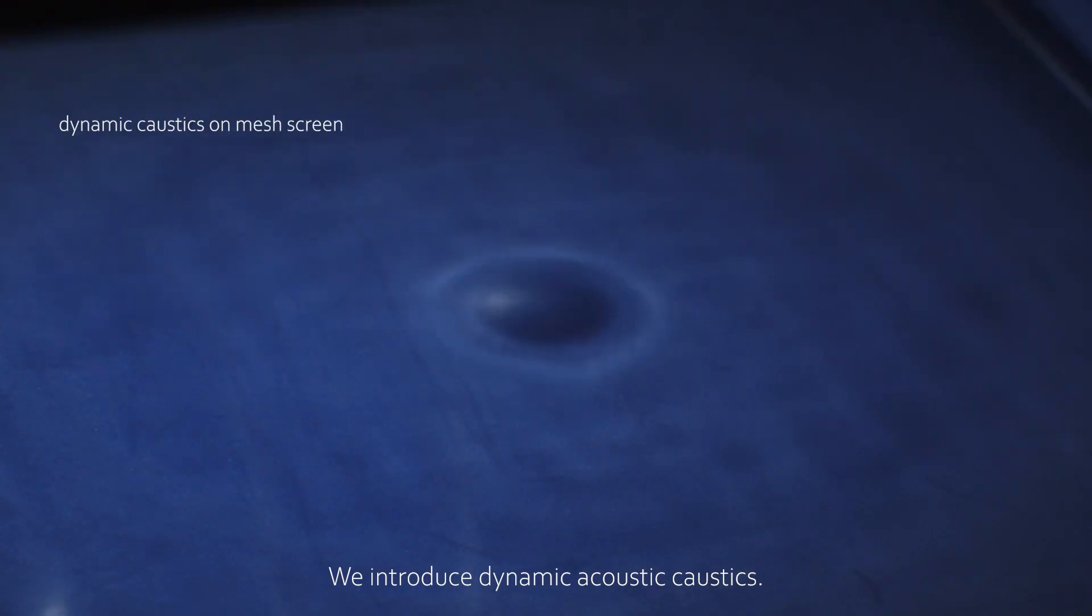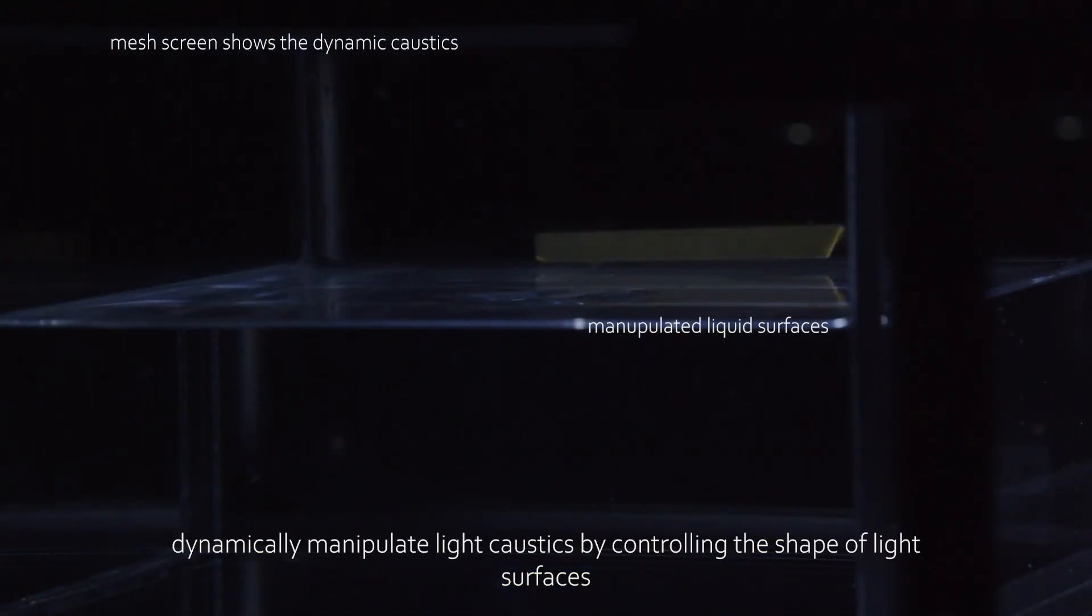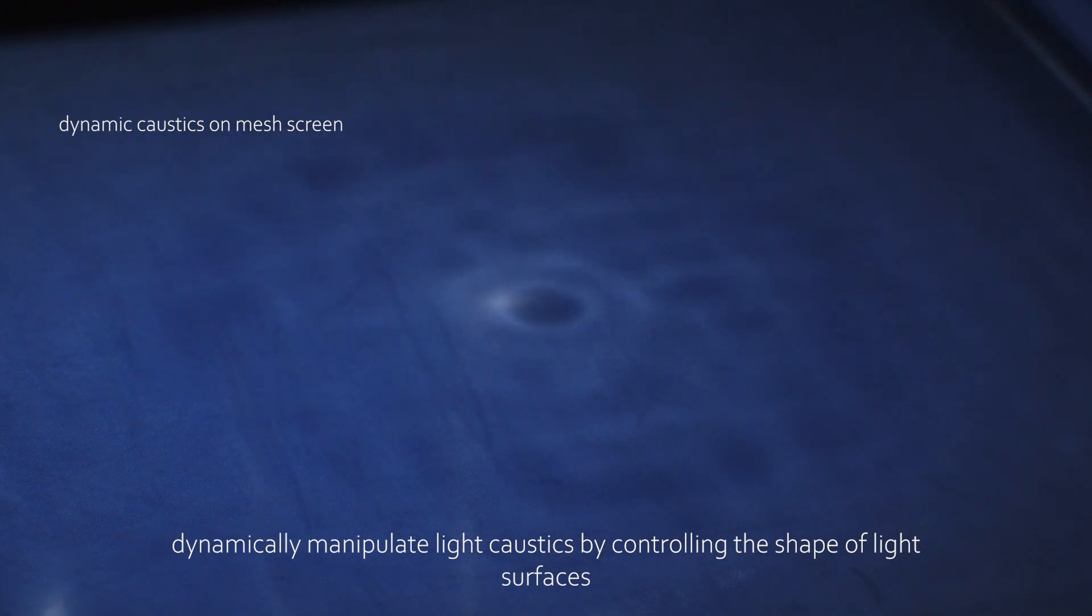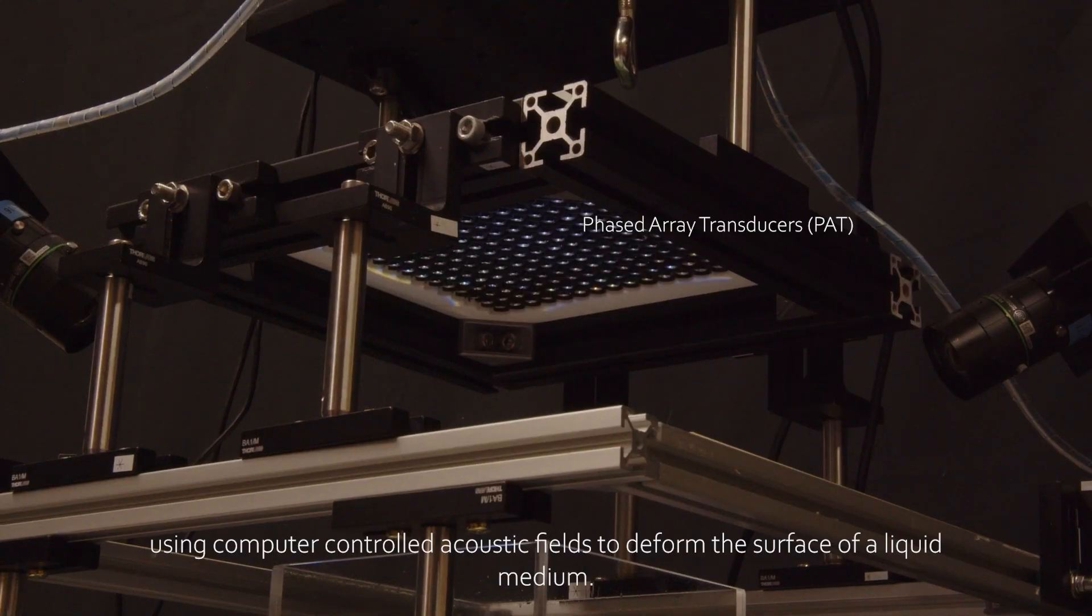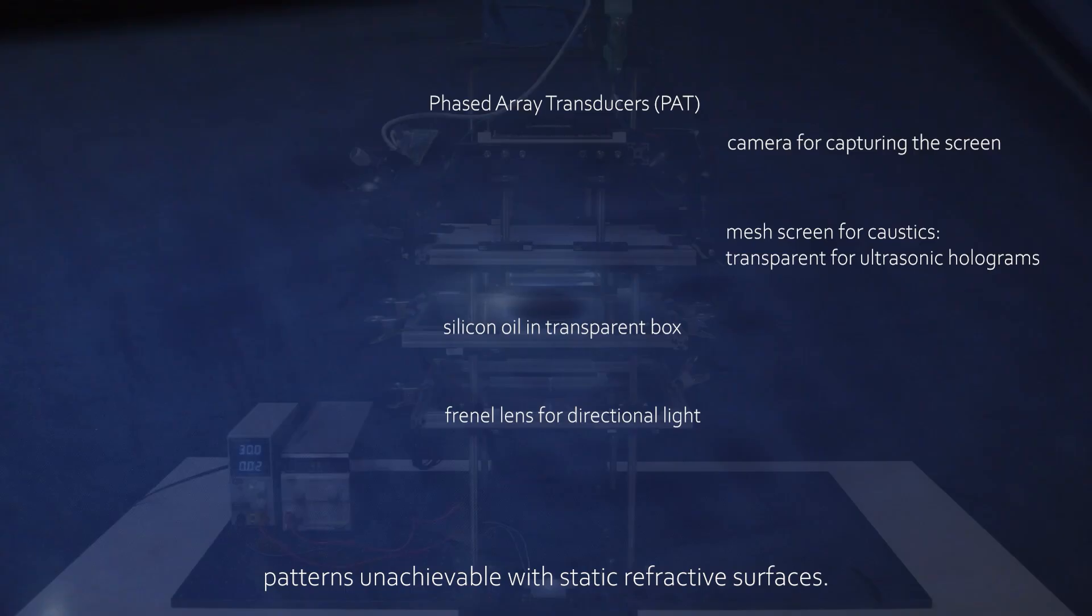We introduce dynamic acoustocaustics, a method that merges acoustofluidics with optics to dynamically manipulate light caustics by controlling the shape of liquid surfaces. Using computer-controlled acoustic fields to deform the surface of a liquid medium, we generate dynamic light behaviors in fluid patterns unachievable with static refractive surfaces.